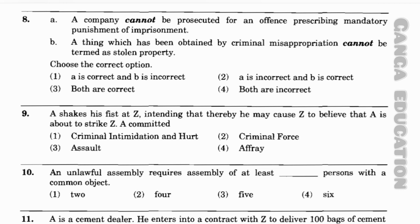Question number 10: An unlawful assembly requires assembly of at least how many persons with a common object? Option 1: two; option 2: four; option 3: five; option 4: six. The correct answer is option 3 — five.